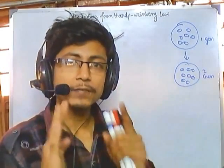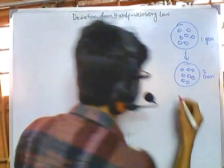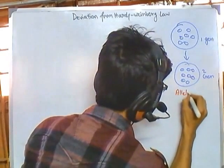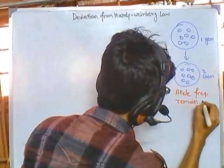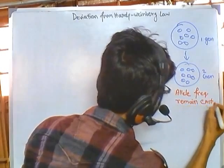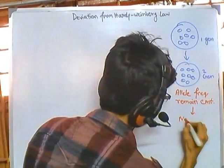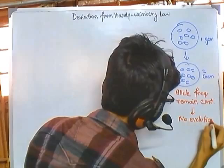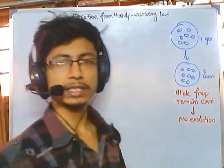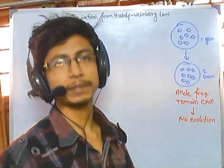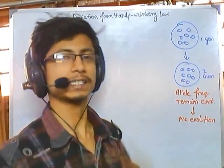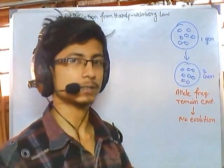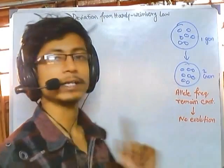If the allele frequency remains constant, there will be no evolution. Evolution means there will be a change in allele frequency or gene frequency from generation to generation — that tells us evolution is taking place. So that's the rule of Hardy-Weinberg.